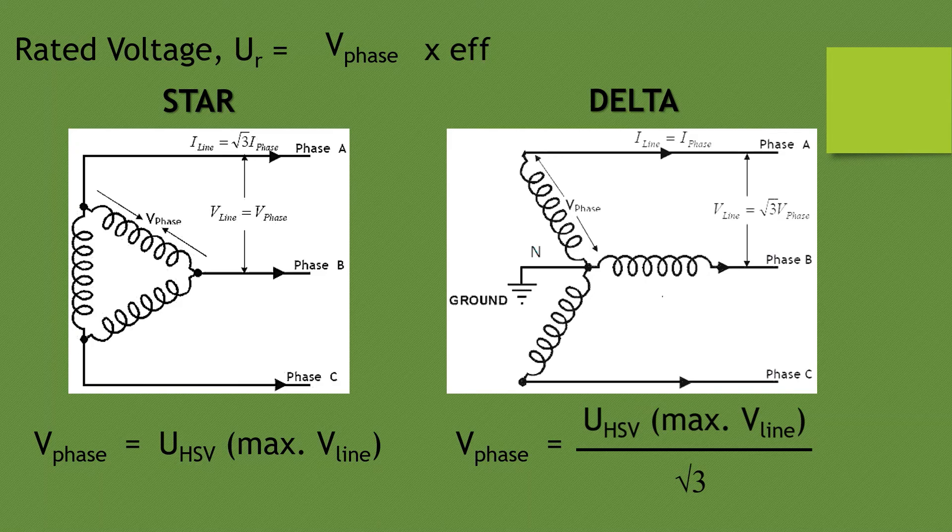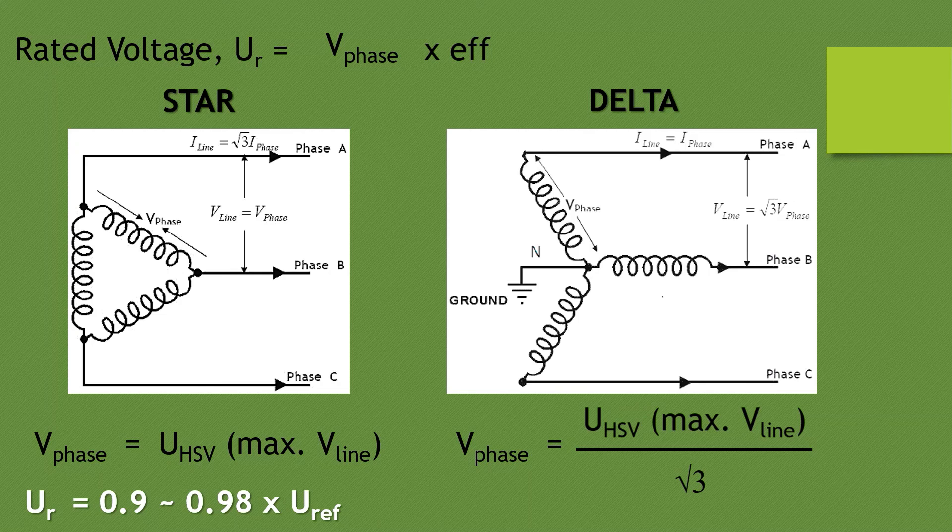Rated voltage is typically 90% to 98% of reference voltage depending on the derating done for the arrestor for making the adjustment in the energy handling capability of the arrestor.